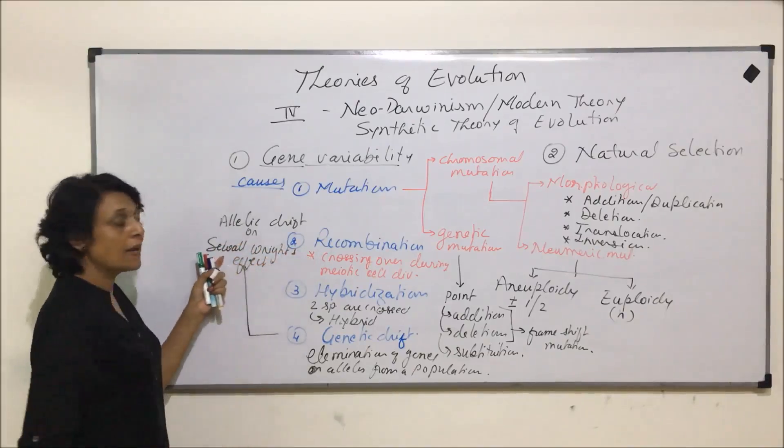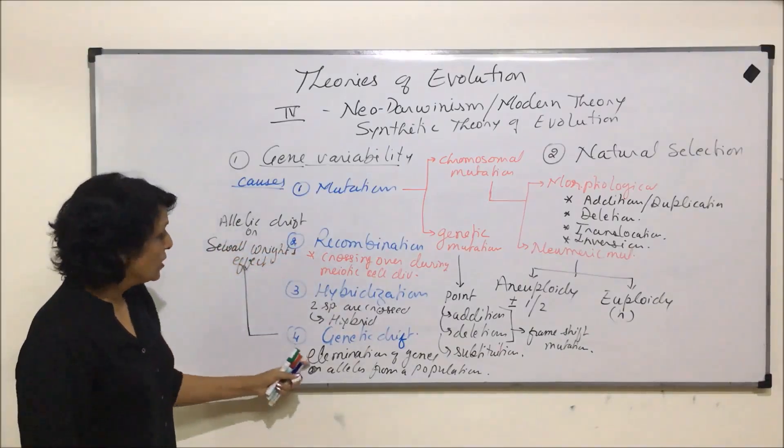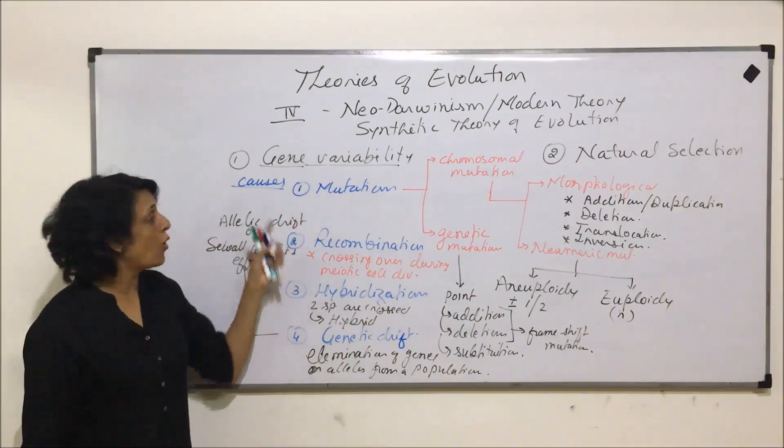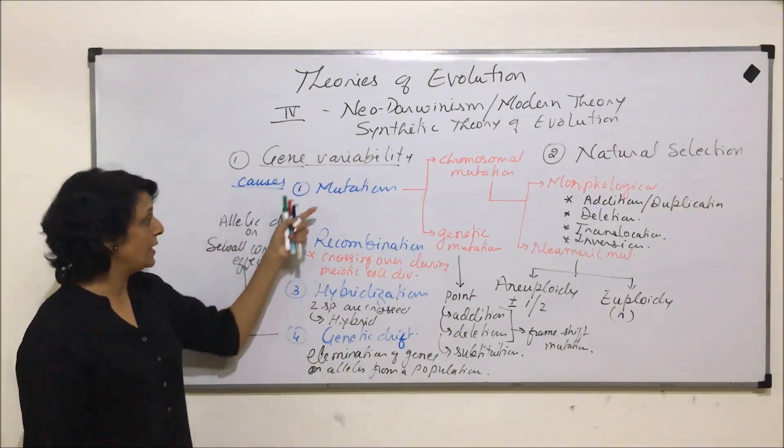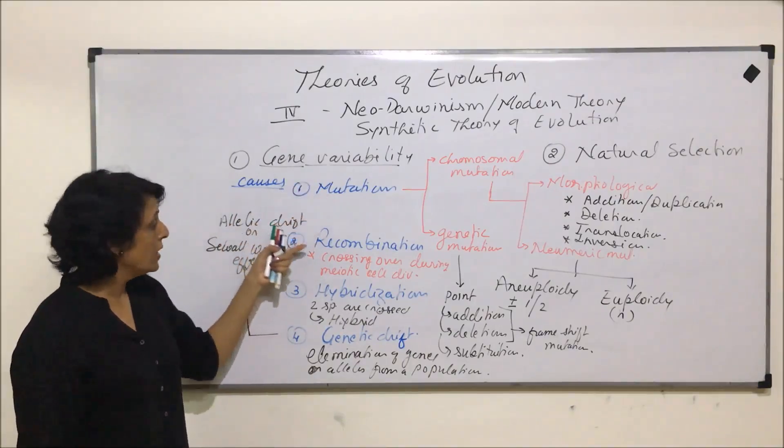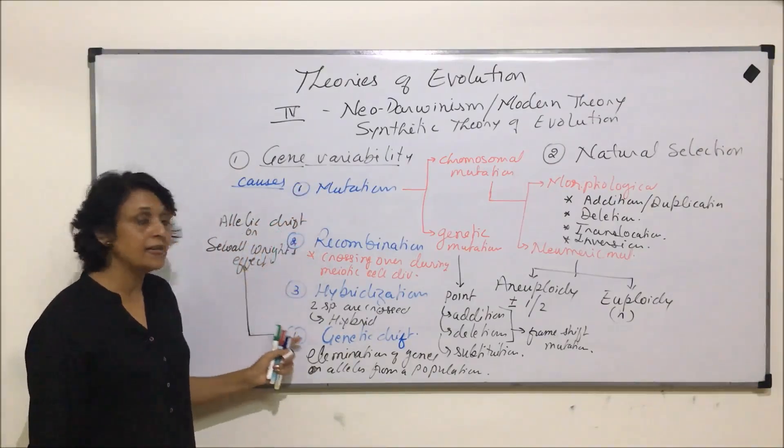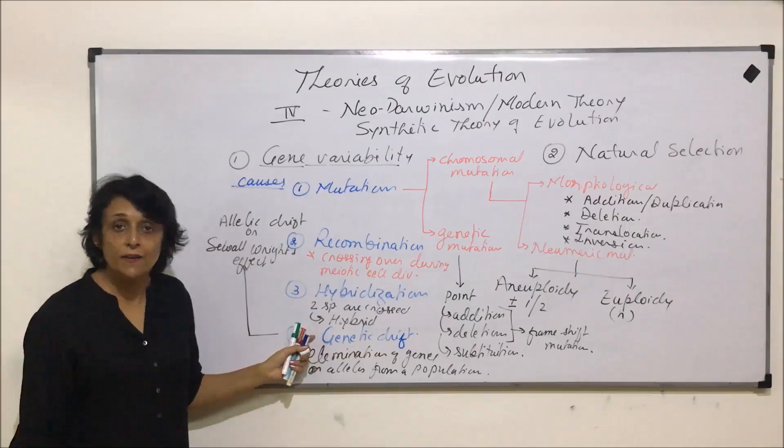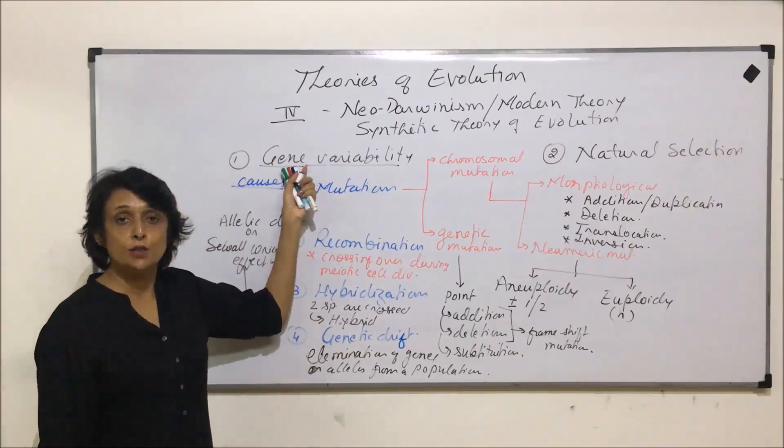So these are four reasons or causes for gene variability: mutation, recombination, hybridization, or genetic drift. So this is about the first postulate.